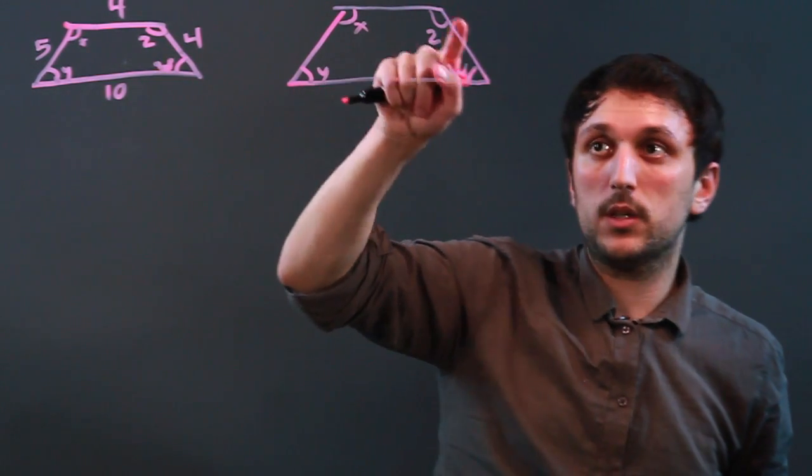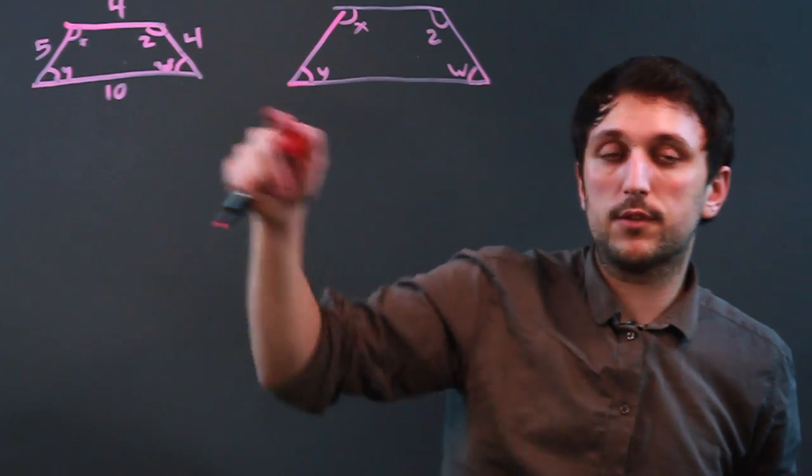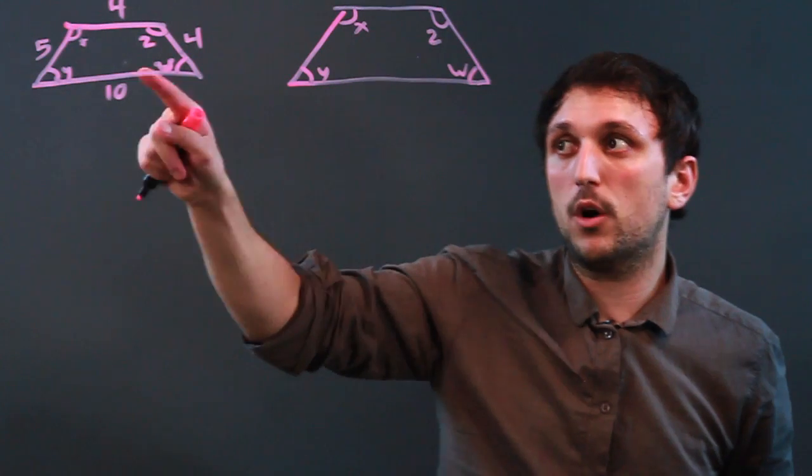then no matter what the length of the sides are here, the trapezoids are similar. They're not congruent, but they are proportionate.